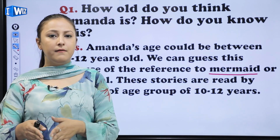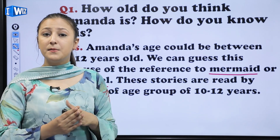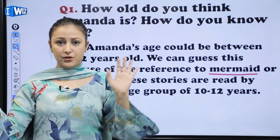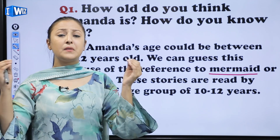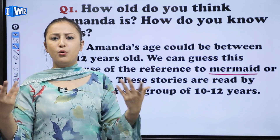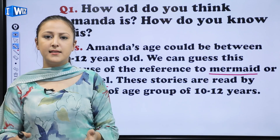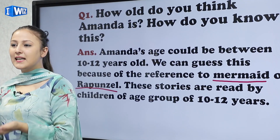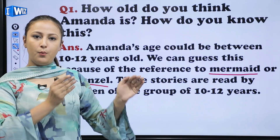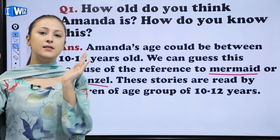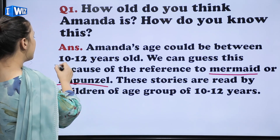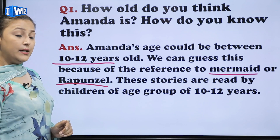She is a kid, just 10 to 12 years old. She imagines herself as a mermaid and Rapunzel — these are imaginary pictures. She is not grown up. An adult would not think this way. Amanda thinking she is a mermaid and then Rapunzel means she is only 10 to 12 years old.